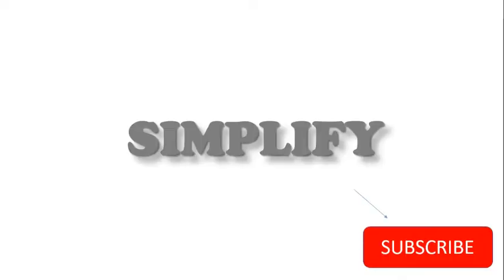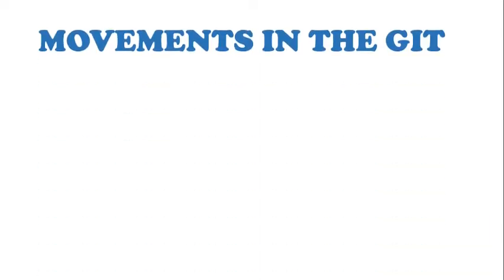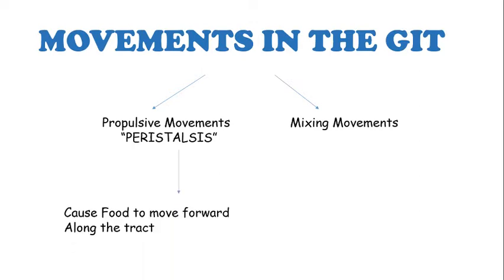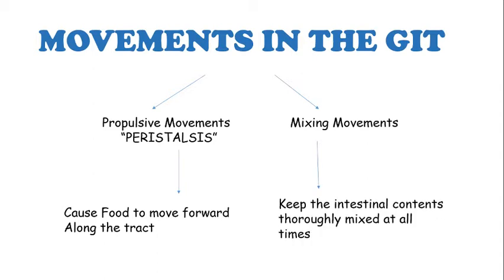If you like our videos, don't forget to subscribe to promote our channel. In the gastrointestinal tract, there are two types of movements: number one are propulsive movements or peristaltic movements, and number two are mixing movements. The propulsive movements cause the food to move forward along the tract, whereas the mixing movements keep the intestinal contents thoroughly mixed at all times.